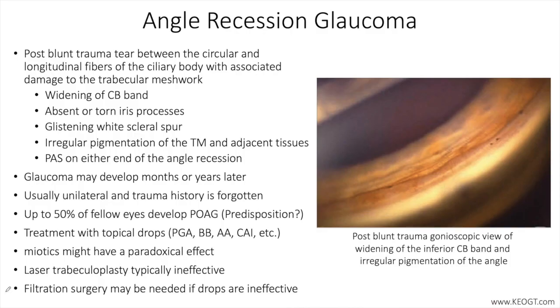Angle recession of the anterior chamber angle occurs secondary to concussive ocular trauma. It is associated with glaucoma in a minority of patients, and the development of glaucoma may occur shortly after the trauma or many decades later.